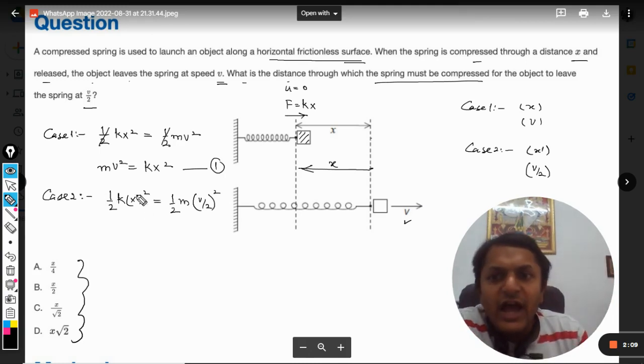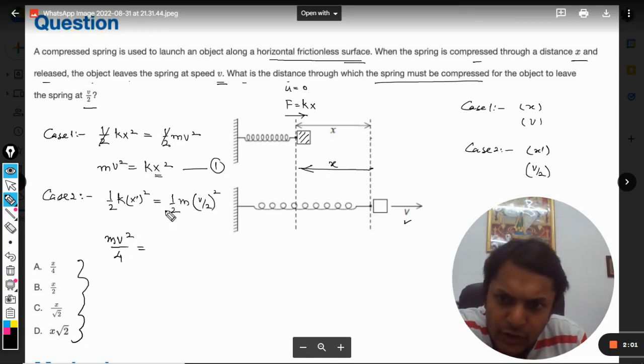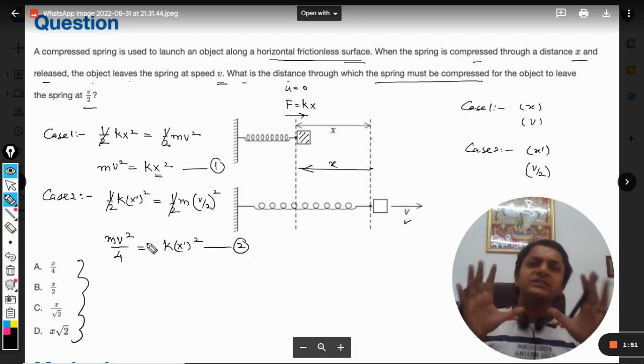From here I can say that mv²/4, because half will get canceled with half, so mv²/4 = k(x')². This will become our second equation.